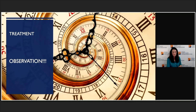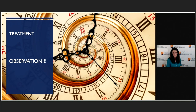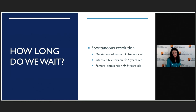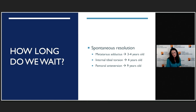It doesn't really matter though because the treatment is going to be the same for everything — basically observation and time. When you think you haven't given it enough time, give it a little bit more. We expect spontaneous resolution. For metatarsus adductus, most of that will sort itself out by the time the kid is one, and can be up until about three or four years old. For internal tibial torsion, that's going to work itself out by about four years old. And then femoral anteversion is the last one — it resolves around age nine or so.